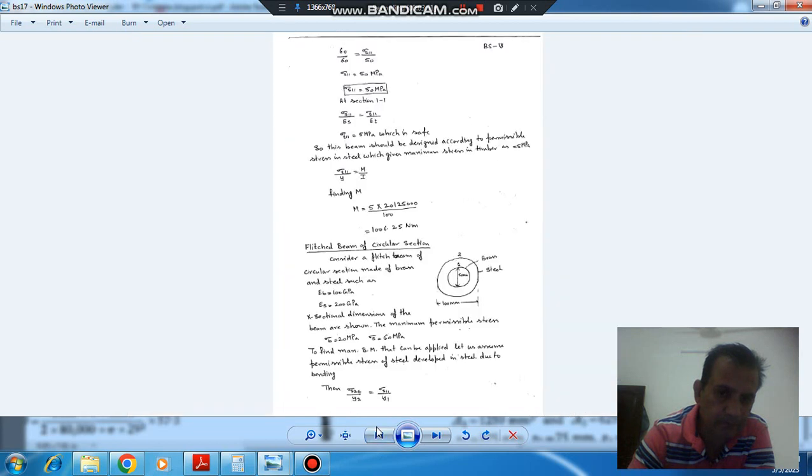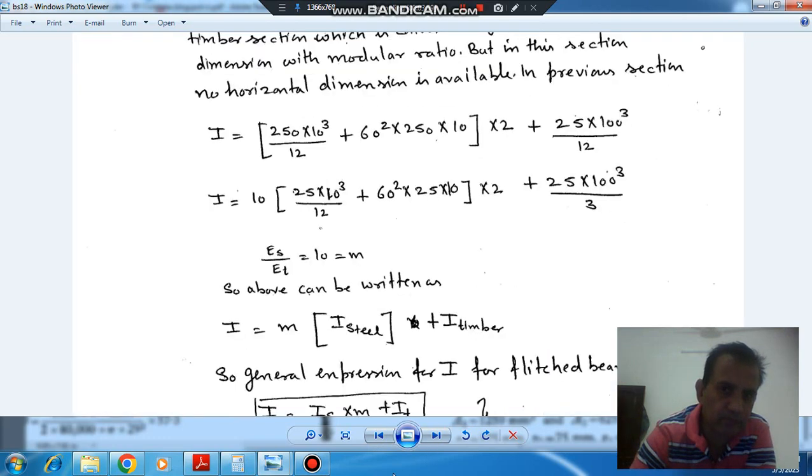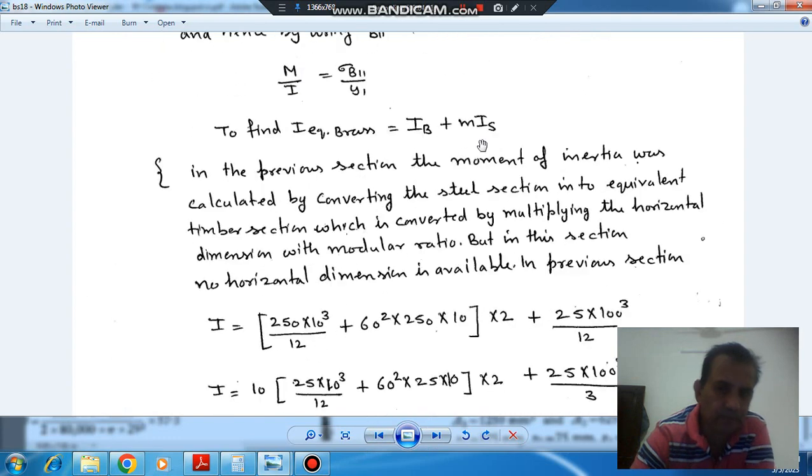I is I_B plus m·I_S. I_B means moment of inertia of brass, inner portion. And I_S is moment of inertia of steel. And m is modular ratio. So this is a common formula for both rectangular and circular section.